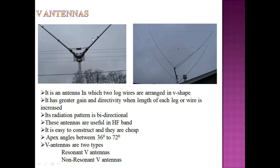This is the V antenna, shaped like the letter V, where long wires are arranged in a V shape. It has high gain and high directivity. Increasing the length of the wires increases the gain. The angle between the two wires is 36 to 72 degrees. There are two types: resonant V antenna and non-resonant V antenna. It has bidirectional characteristics and can be used in HF bands.